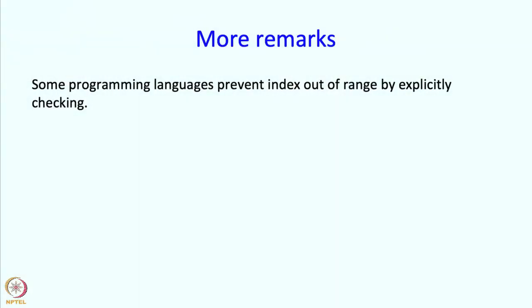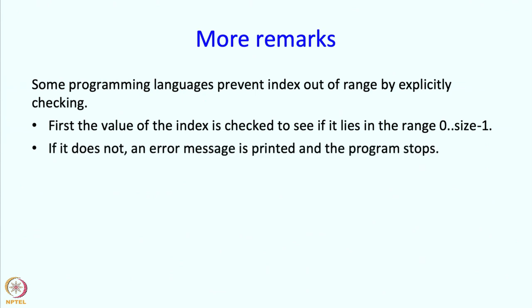Now, some programming languages prevent index out of range by explicitly checking. So the moment you write A[i], the language will have additional code which it generates itself - you do not have to write it - which will check first whether i lies in the range 0 through size-1, where the size is the size of the array in question. If it does not, then it will not make that access. It will just print an error message saying that you gave an index out of range and the program will stop.